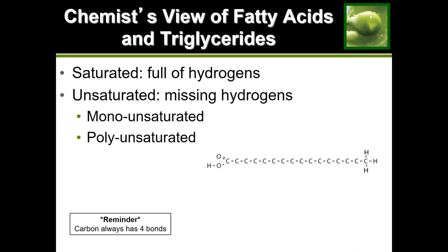Another way to categorize fatty acids is based on how many hydrogens are on the structure. A fatty acid chain will always have a carboxyl on one end and a methyl group on the other end, with carbons in the middle. The carbons usually have hydrogens on them, and the amount of hydrogens present will differentiate whether it is a saturated or unsaturated fatty acid.